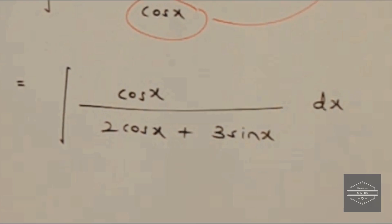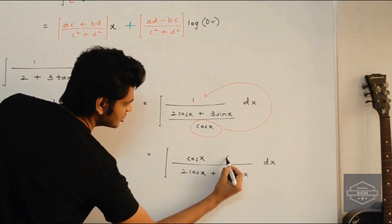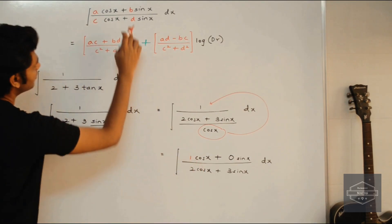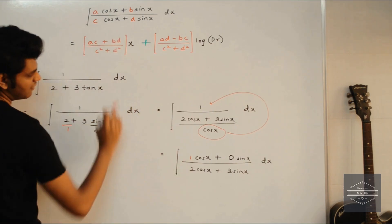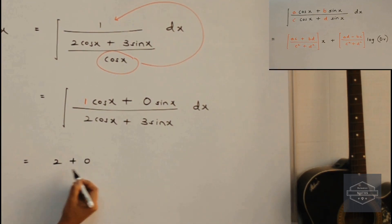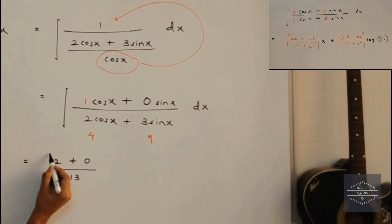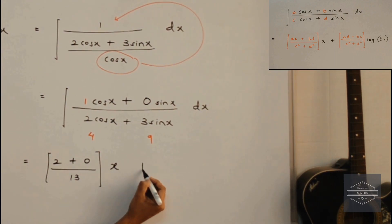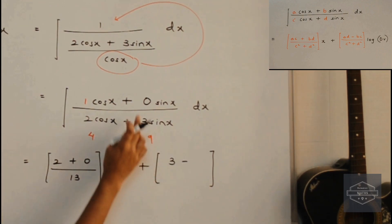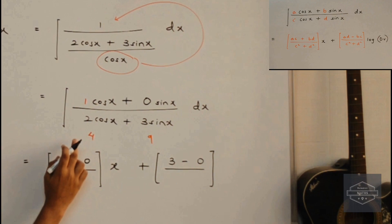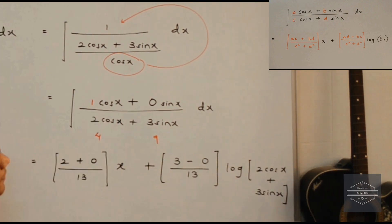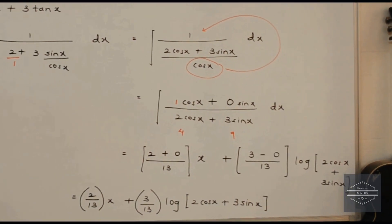Now in the numerator there is no sin term, but we can create it by writing 0 sin x. So a equals 1, b equals 0, c equals 2, and d equals 3. Applying the shortcut: first term is 1 into 2 plus 0 into 3, which is 2, upon 4 plus 9 equals 13, multiplied by x. Second term using criss-cross: 1 into 3 minus 0 into 2 gives 3 upon 13, multiplied by log of the denominator. And that is our final answer.